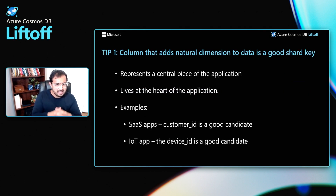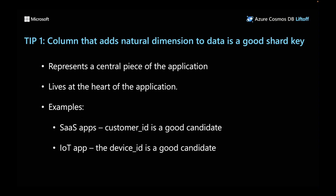Tip one: a column that adds a natural dimension to data is a good shard key. We've seen this across customers — if they pick a column that represents the central piece of the application, most of the time it works out very well. For example, if you're building a SaaS app with multiple customers each interacting with their own data, customer ID is a natural dimension and a good candidate. For an IoT app where you get data from devices, device ID — the heart of the application — is also a good candidate.